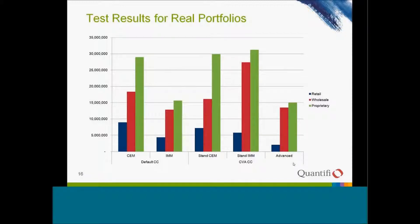Another interesting detail is that we usually hear that Basel III capital charges are much bigger than Basel II. But here we don't really see this. Basel III in some instances is bigger, but they are comparable. For example, for the proprietary IMM portfolio, Basel II is even bigger than Basel III. This reminds us that Basel II also had pretty significant capital charges, and we have to remember this component when discussing how capital charges have changed.